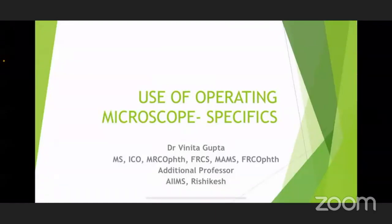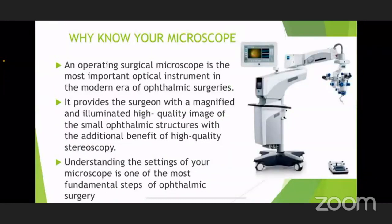As already discussed by all the speakers earlier, knowing how to use an operating microscope is the basics which a person joining as a postgraduate trainee in ophthalmology has to know. Since it is the most important surgical instrument in our ophthalmic surgeries, it provides us not only with a magnified and illuminated high quality image of the miniature structures of the eye, but also a high quality of stereopsis, which is required for all surgical procedures. Understanding the settings of your microscope is therefore the most important fundamental step of an ophthalmic surgery.